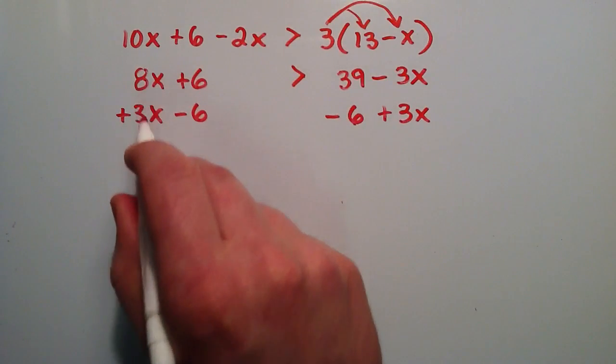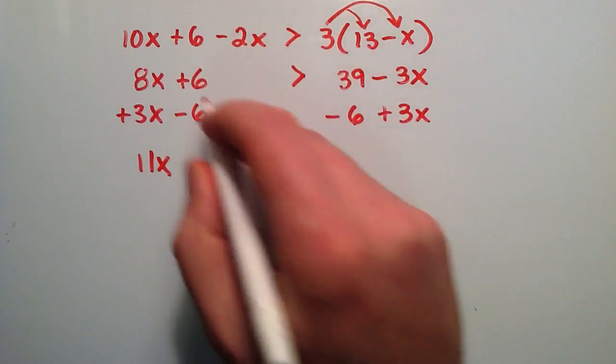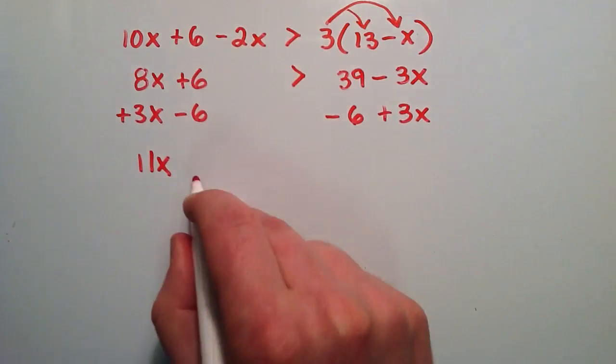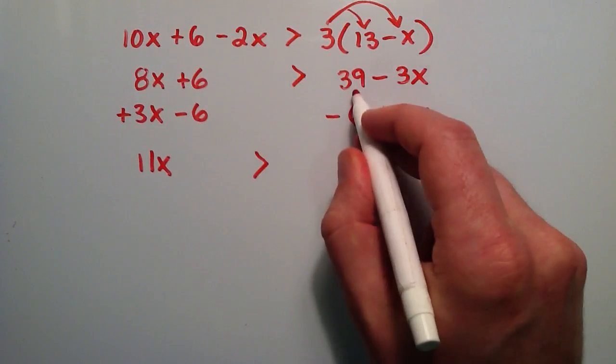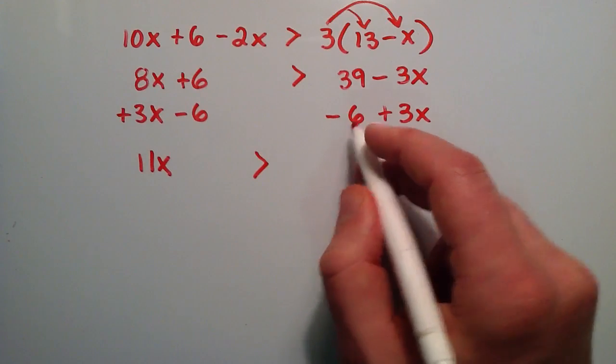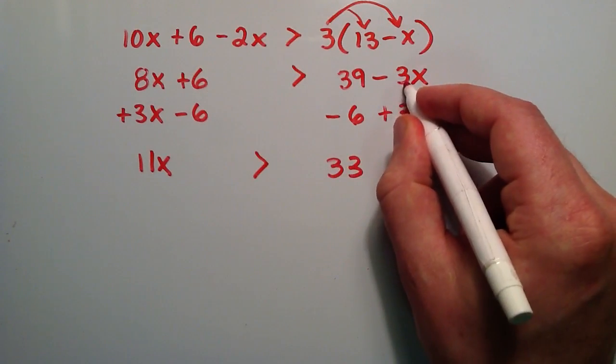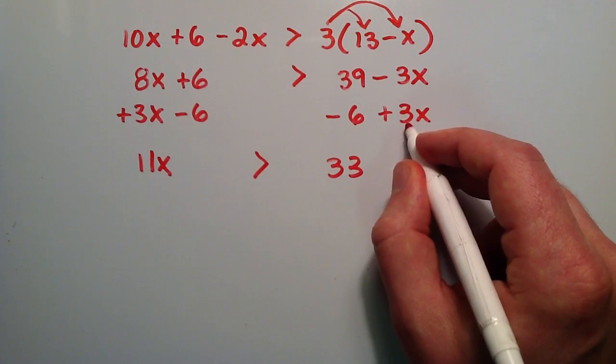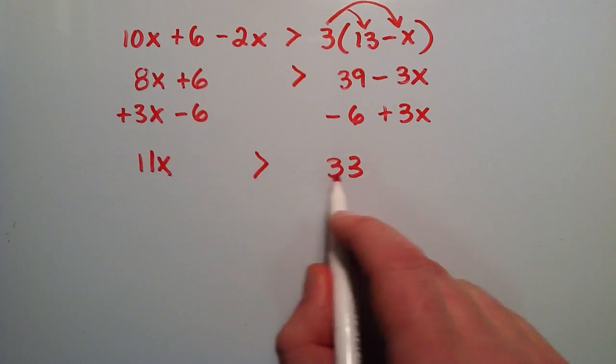So 8x plus 3 more x's is 11x's. Positive 6 and a negative 6 is 0. Then we have our greater than sign. 39 minus 6 is going to give us 33. Negative 3x and a positive 3x is 0. So now we have 11x is greater than 33.